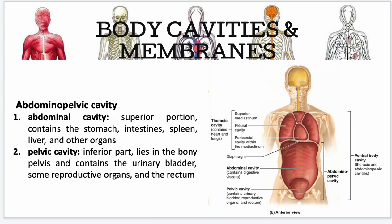Next is your abdominopelvic cavity. First is your abdominal cavity — it's the more superior portion and contains your stomach, intestines, spleen, liver, and other organs. Your pelvic cavity is the inferior one; it lies in the bony pelvis and contains your urinary bladder, some reproductive organs, and the rectum.